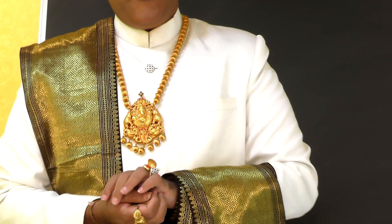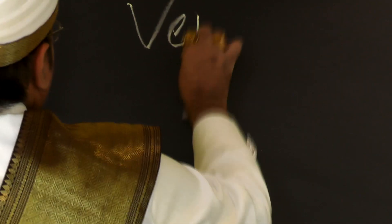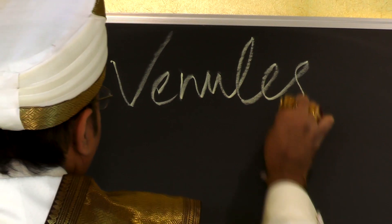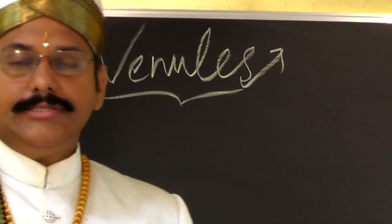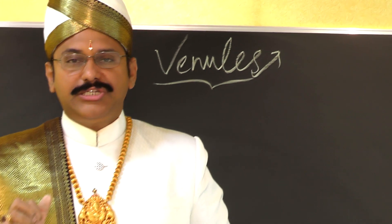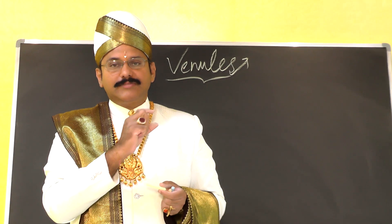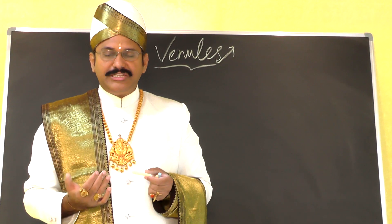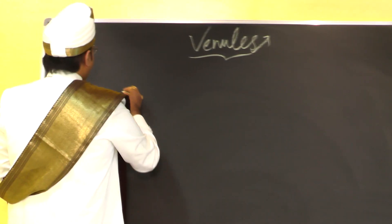Venules are the smallest veins into which the capillaries drain. The lumen of a venule is 20 to 30 microns in circumference.